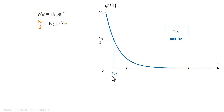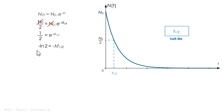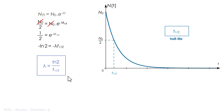At this point I simplify by N₀, and I have one-half equals e to the minus λ·t½. Taking the natural logarithm of both sides, it comes: minus ln(2) equals minus λ times t½. And I get the formula I was looking for: λ = ln(2) / t½.